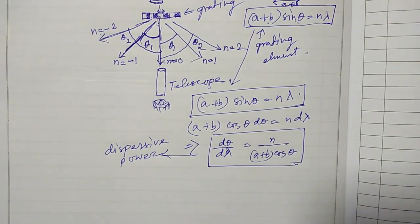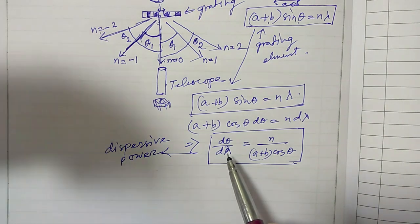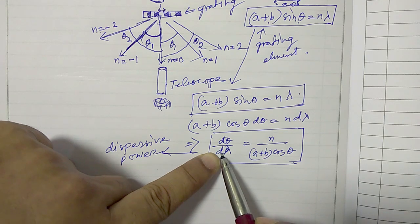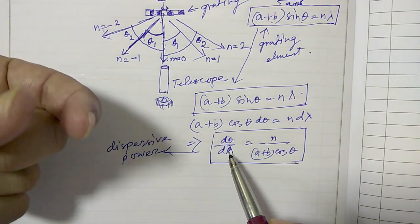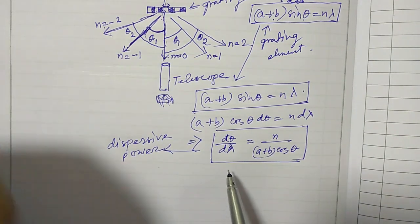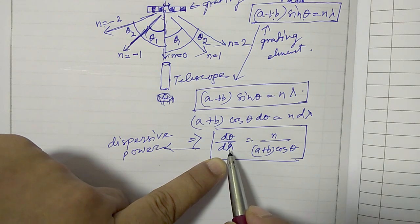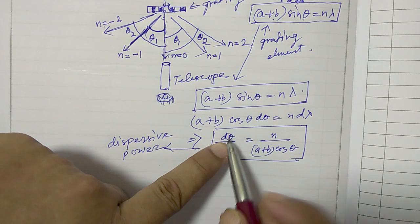Now you see, to calculate the dispersive power d theta by d lambda, as I explained earlier, what this ratio means is: if you have a source for which there are two wavelengths and the difference between these two wavelengths is d lambda, then for that difference between the wavelength, how much would be their angle difference?